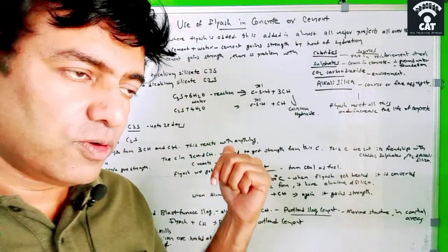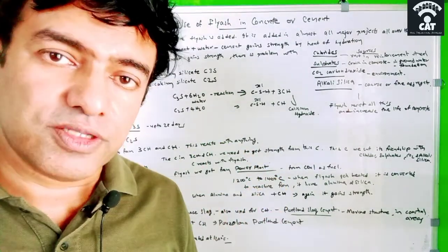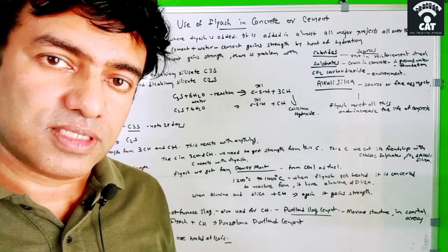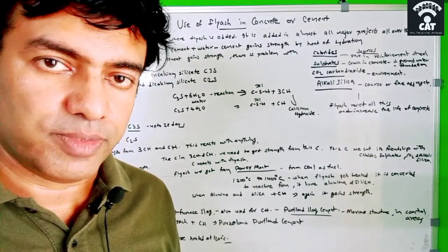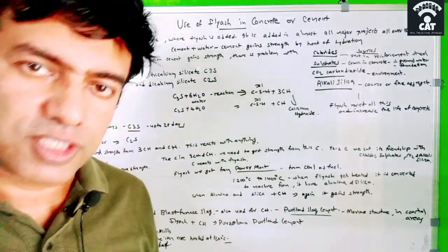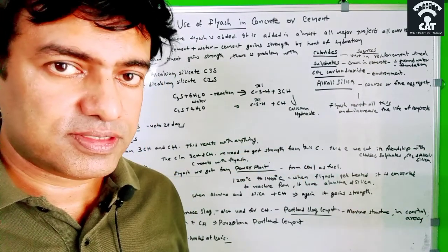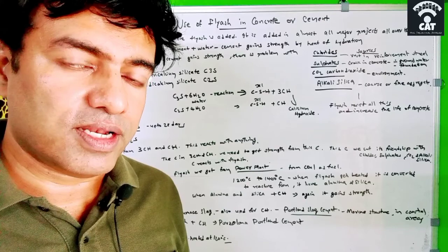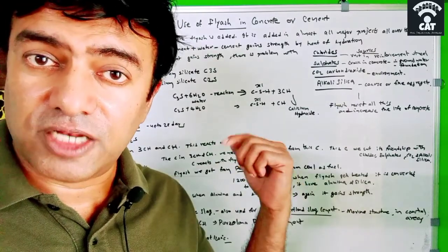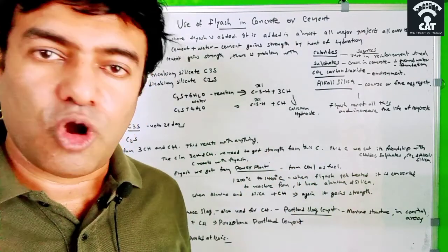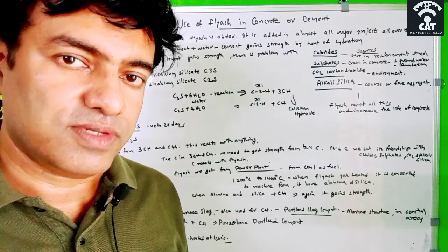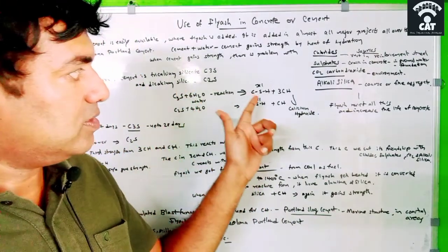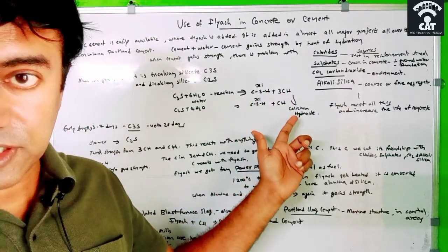When we talk about tricalcium silicate (C3S), it gives strength to the cement from day 3 onwards — from day 3 to day 7 it acts strongly, and continues giving strength throughout 28 days. After seven days, dicalcium silicate (C2S) acts at a slower pace but also gives strength. So both C3S and C2S give strength to the cement, and the common factor is calcium.